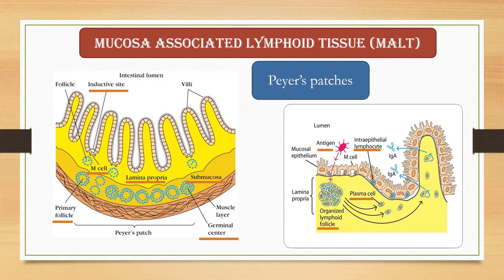The activated B cells secrete IgA antibodies, which transport across the luminal membrane and are released into the intestinal lumen from where it interacts with the antigen.